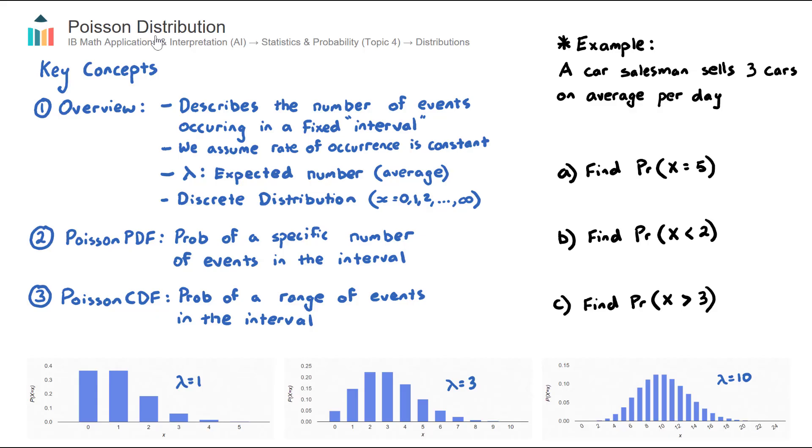In this video, we look at the Poisson distribution, which is part of the AIHL-only course in Topic 4, Statistics and Probability.